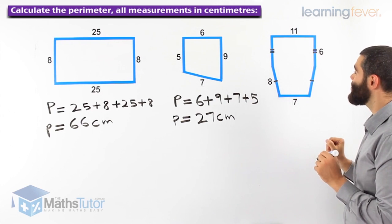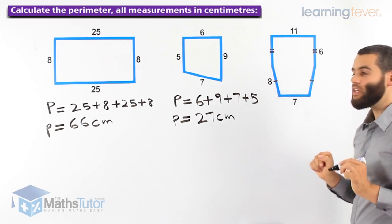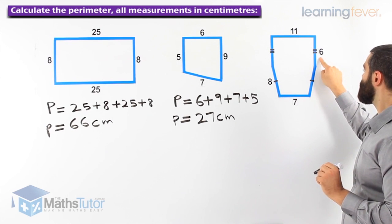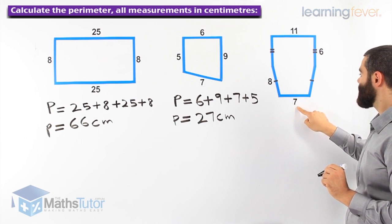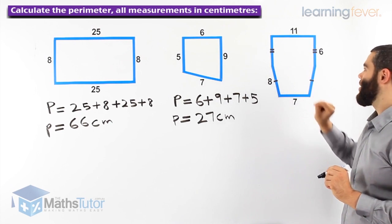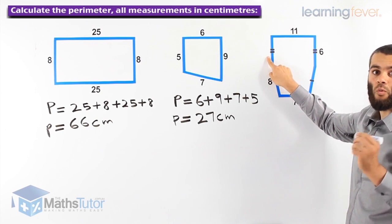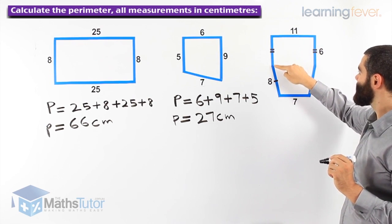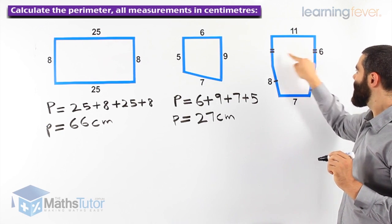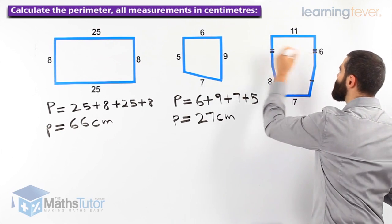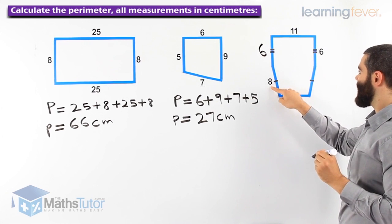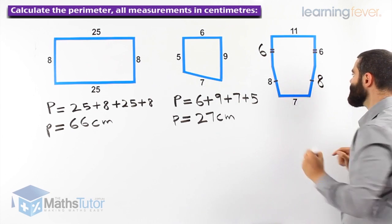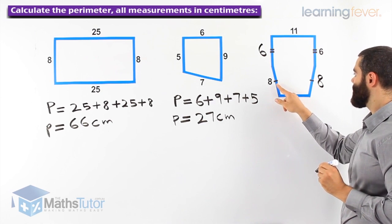This shape here — funny looking shape, but we are not going to get worried. We need to follow the examples before and we are going to solve it very easily. We have 11 here, 6 here, we don't know one side, we have 7 here and 8, and we don't know another side. Now, if this side is 6, the side with matching tick marks must also be 6. Similarly, the side marked with one dash is 8, meaning that side is also 8.